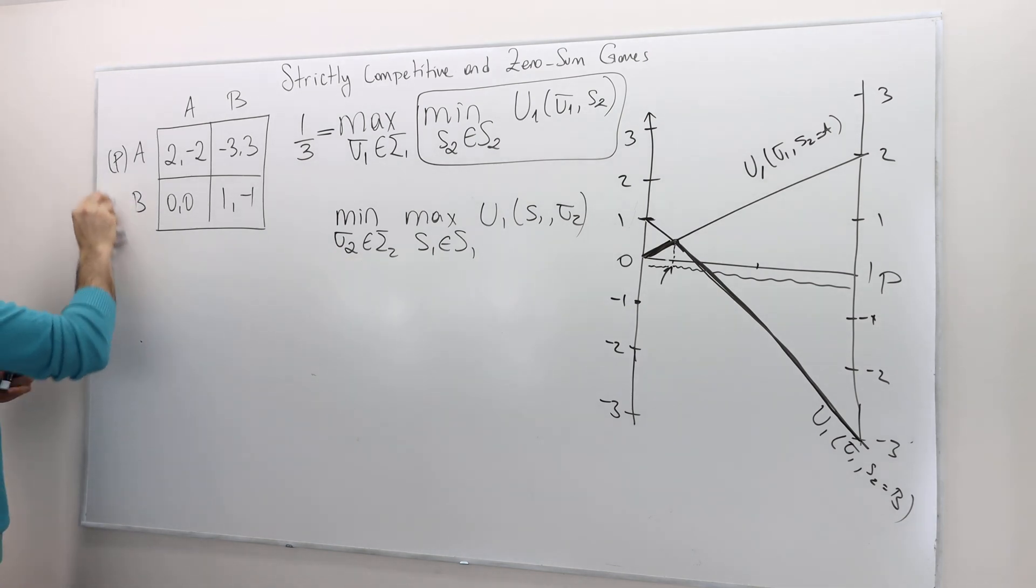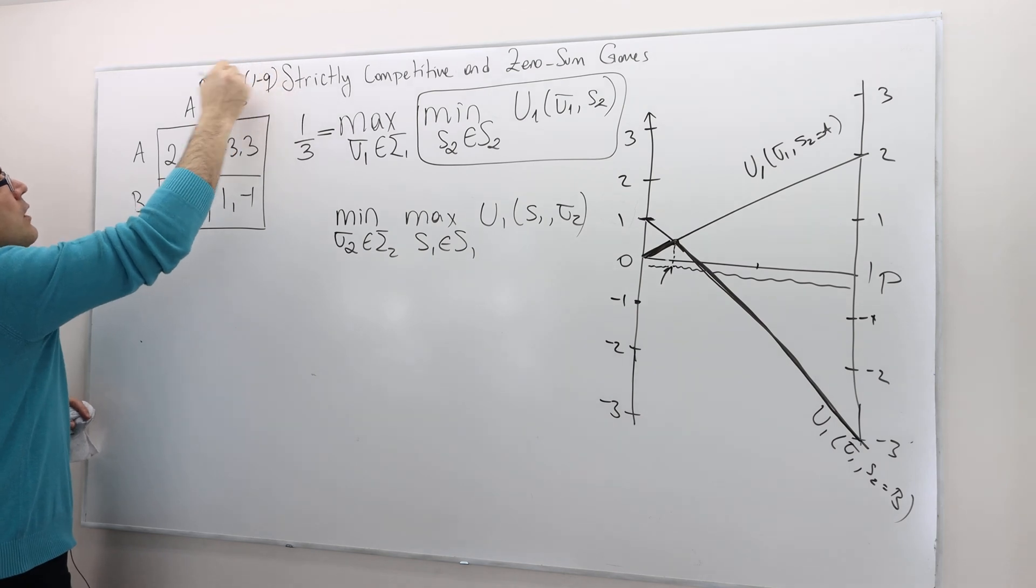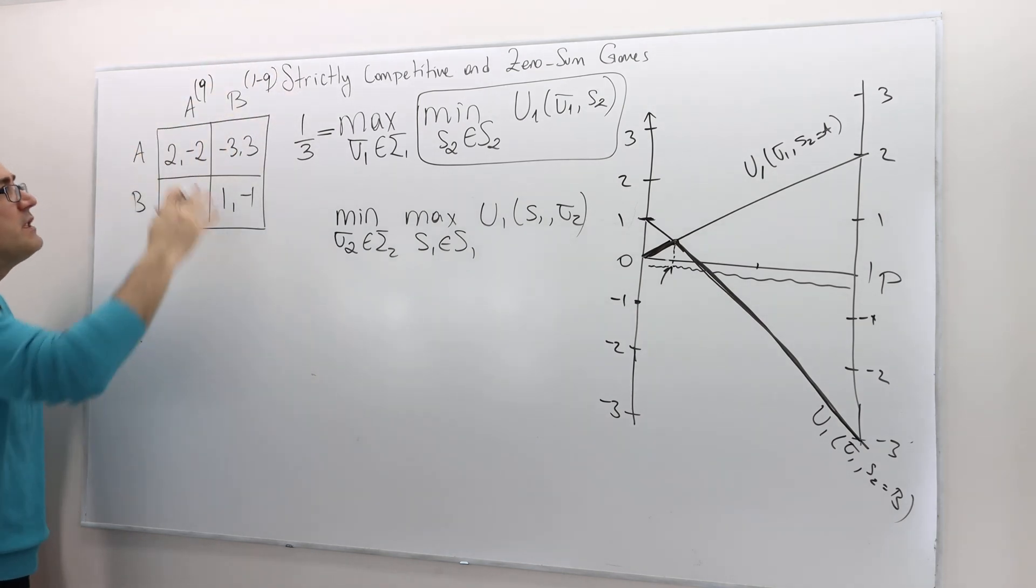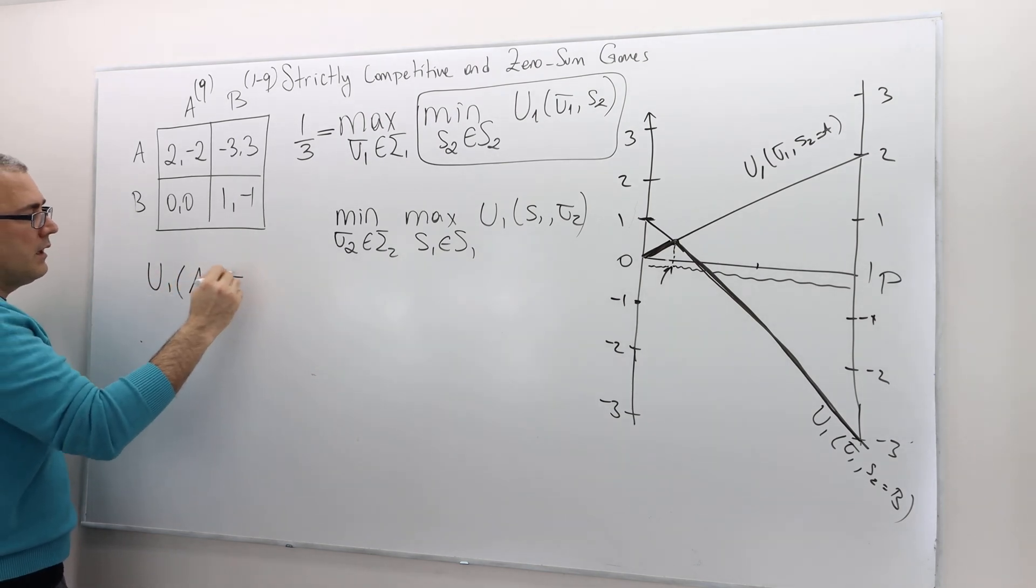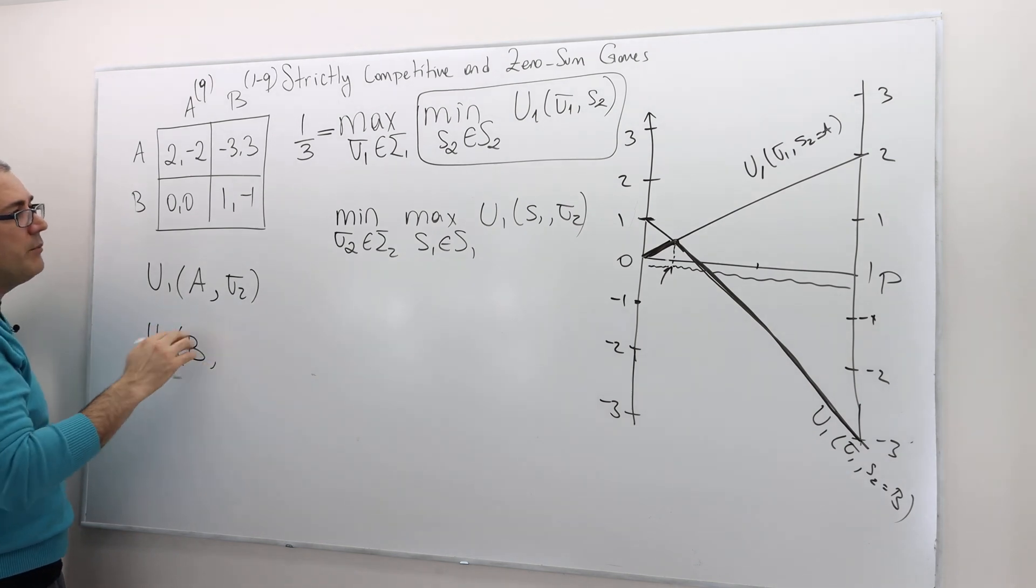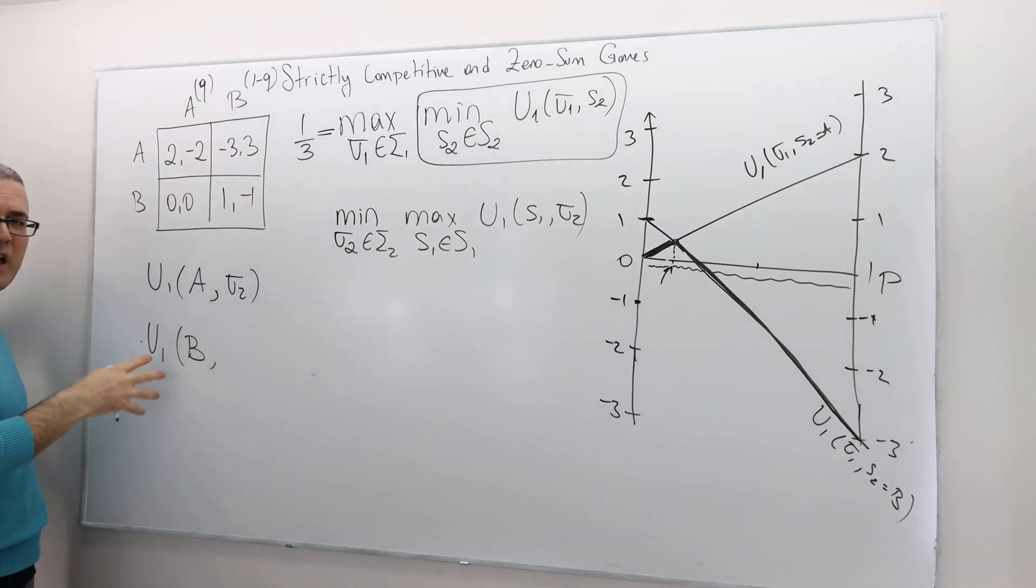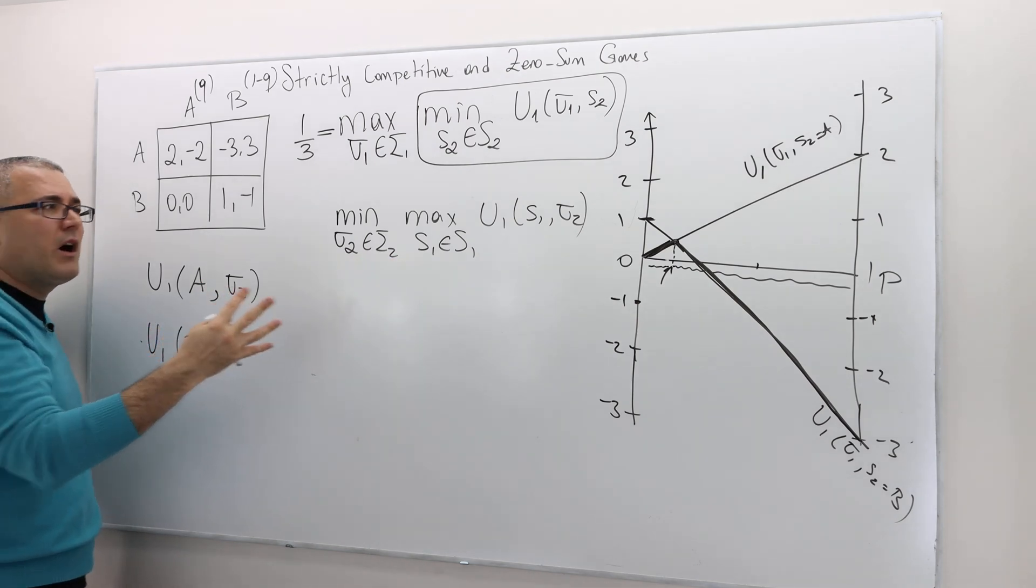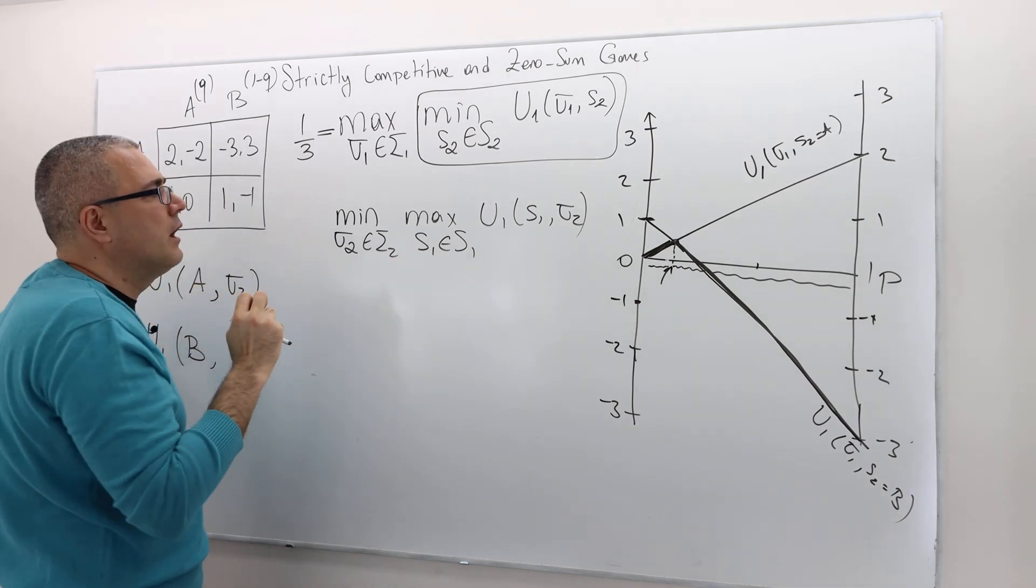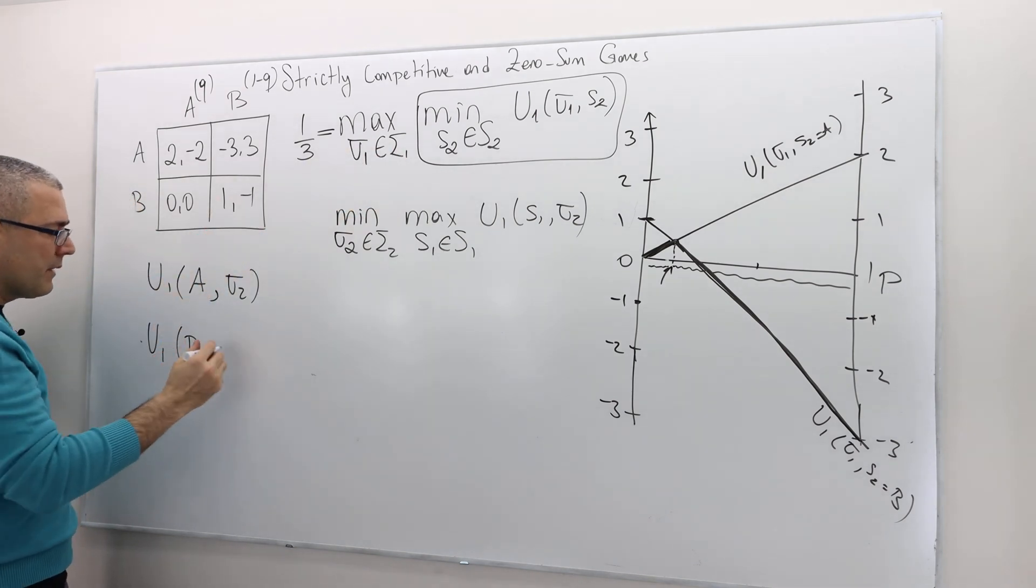Well, sigma 2 is a probability distribution over player 2's pure strategy. So Q, 1 minus Q. All right? So sigma 2 is nothing but Q itself. All right? So now what I'm going to find is my utility fixing sigma 2. If I play A, all right, and then my utility once I play B. Remember, I can look only on my pure strategies. I don't really have to look at my utility under mixed strategies. That's why I use this simpler version of the min-max and max-min.